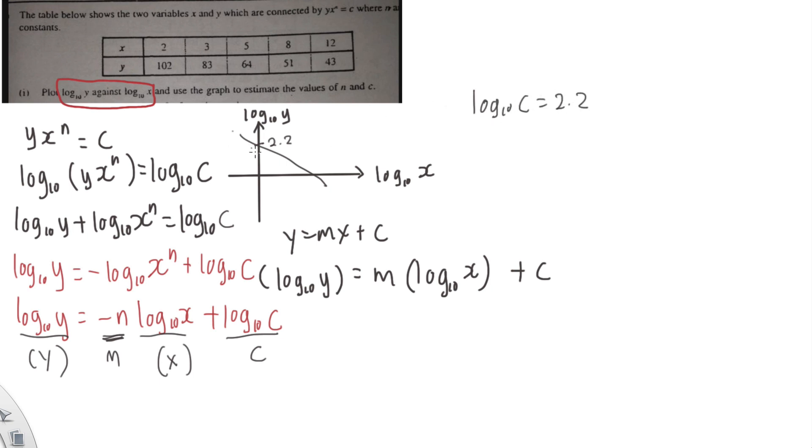Because when it cuts here, this one is y-intercept, right? y-intercept is c. So what you need to do is, you'll make c equals to 10 power of 2.2. Obviously 2.2 is just a random number. I just simply put to give you some idea how to find c.